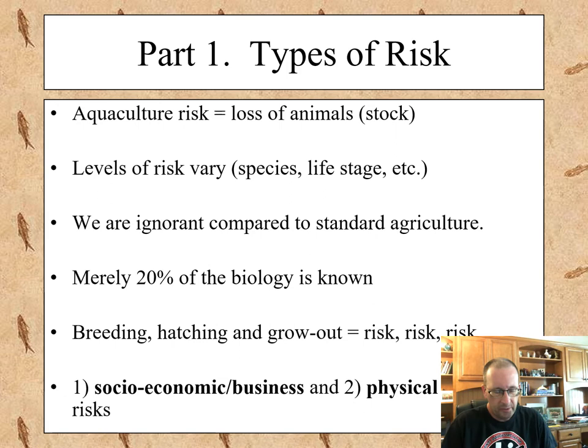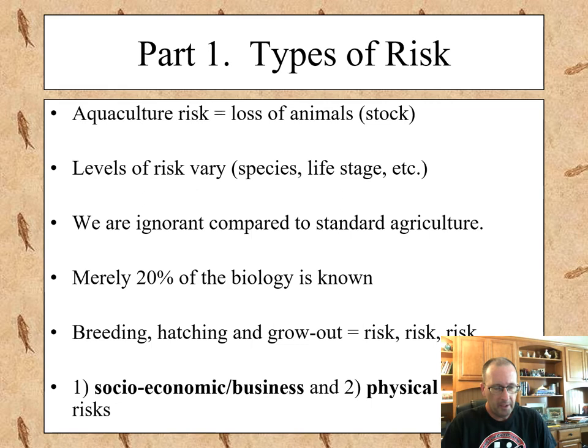We also don't know nearly as much biology about our animals as we would like to believe. As we continue to list potential risks, the list gets pretty long pretty fast. The risks are divided into two broad categories: socio-economic risk versus pure or physical risk.